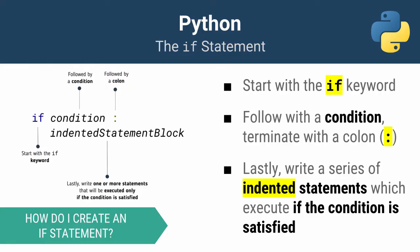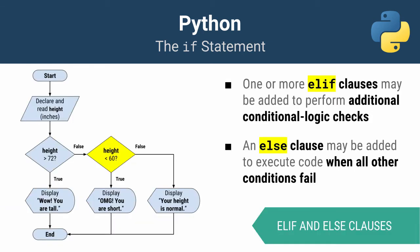Let's take a closer look at the anatomy of an if statement. It starts with the if keyword followed by a condition that you write, followed by a colon. Then any of the code that you want to execute if the condition is true goes in an indented statement block. Let's move on to some of the variations.